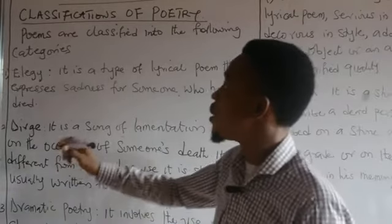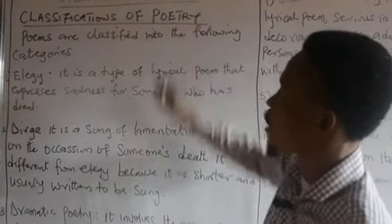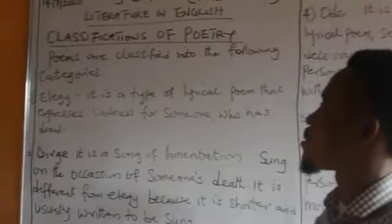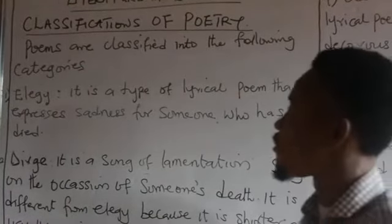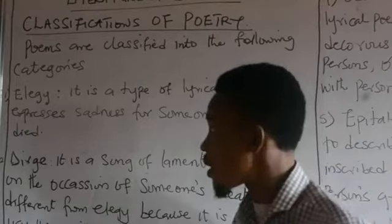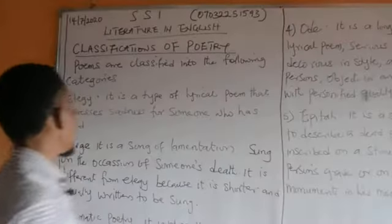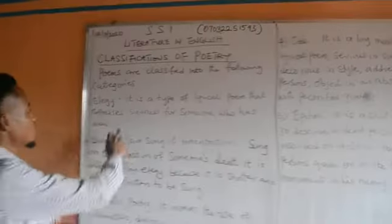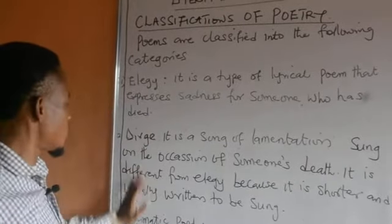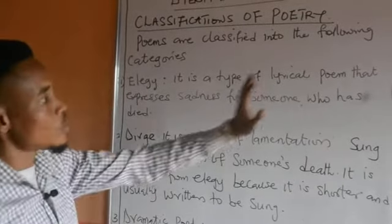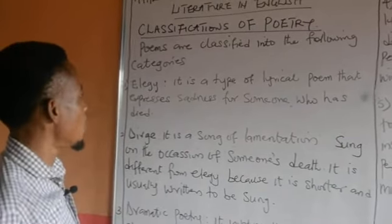For today, we will be looking at the classification of poetry. I have already drafted some certain things on the board. Poems are classified into the following categories. The very first one we have here is the elegy. As a literature student, you need to be familiar with these words, so I will just be discussing them as I have drafted on the board.